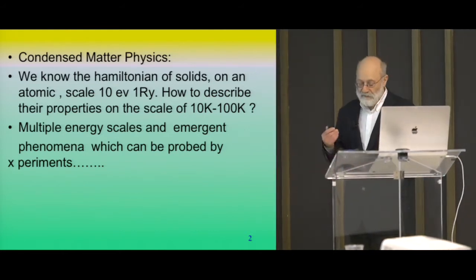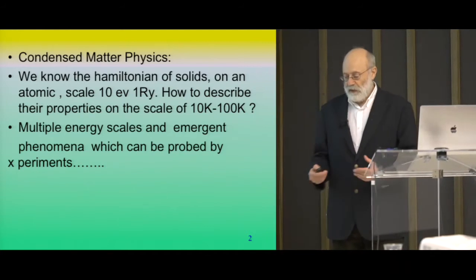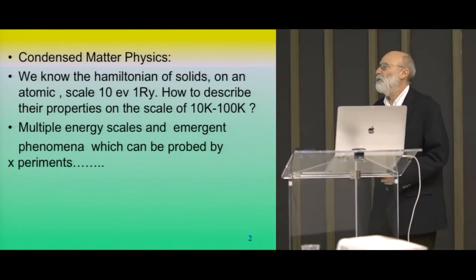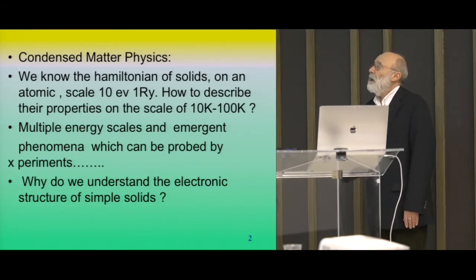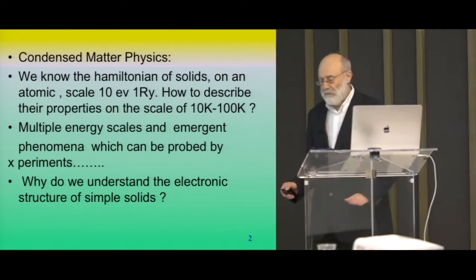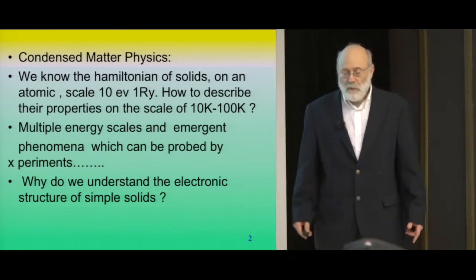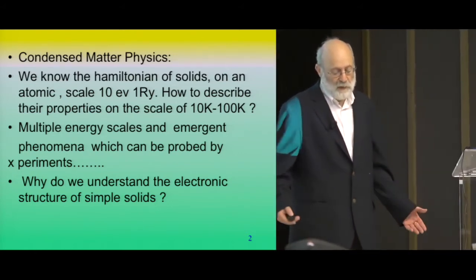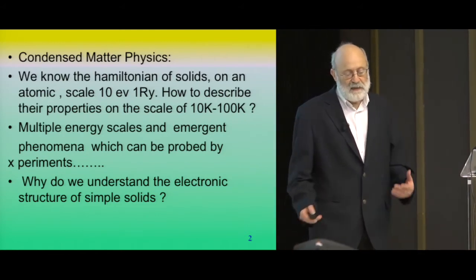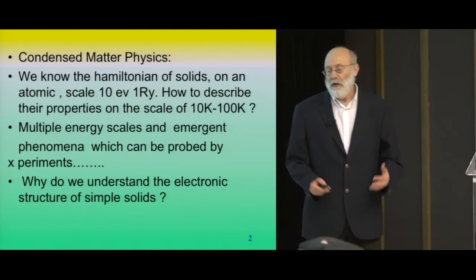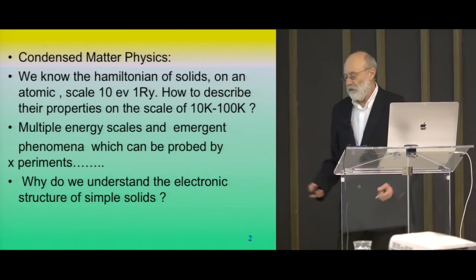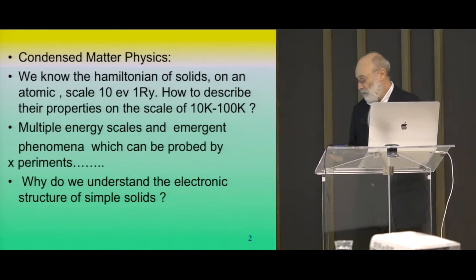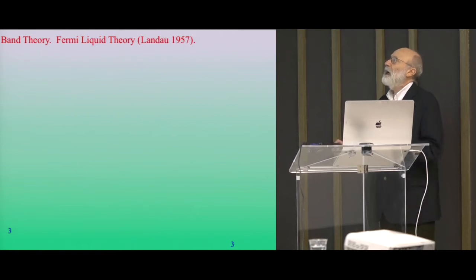The second challenge in condensed matter theory is that we are in close contact with experiments, which is actually a big boon because it helps guide our efforts. To start this talk, I'll begin with a very basic question: what have we achieved in the 20th century? Why do we really understand simple materials such as silicon, copper, or alumina? Those are the basis of our technology, and we understood them very well in the 20th century based on quantum mechanics, even though we still have interacting electrons.